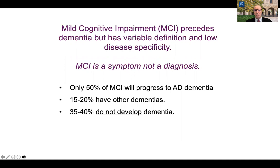Mild cognitive impairment or MCI precedes dementia, but this syndrome has variable definition and low disease specificity. MCI is a symptom not a diagnosis, and only 50 percent of patients with MCI will progress to AD dementia. 15 to 20 percent will have other dementias, but importantly up to 40 percent do not develop dementia on follow-up. So we need better investigations to categorize our patients and give accurate diagnosis and prognosis.